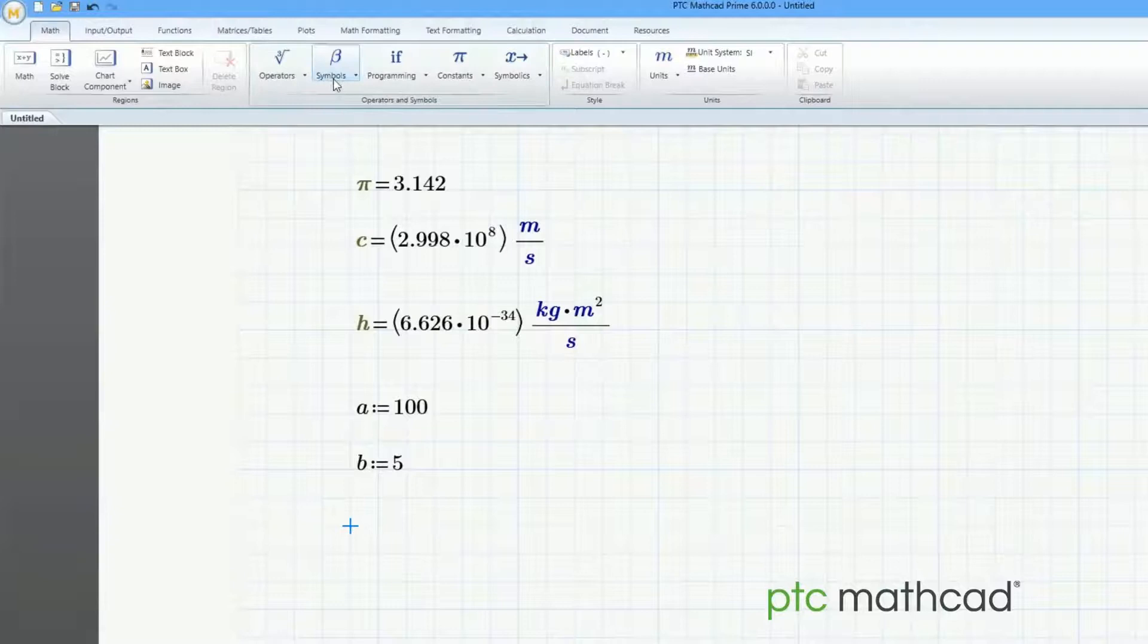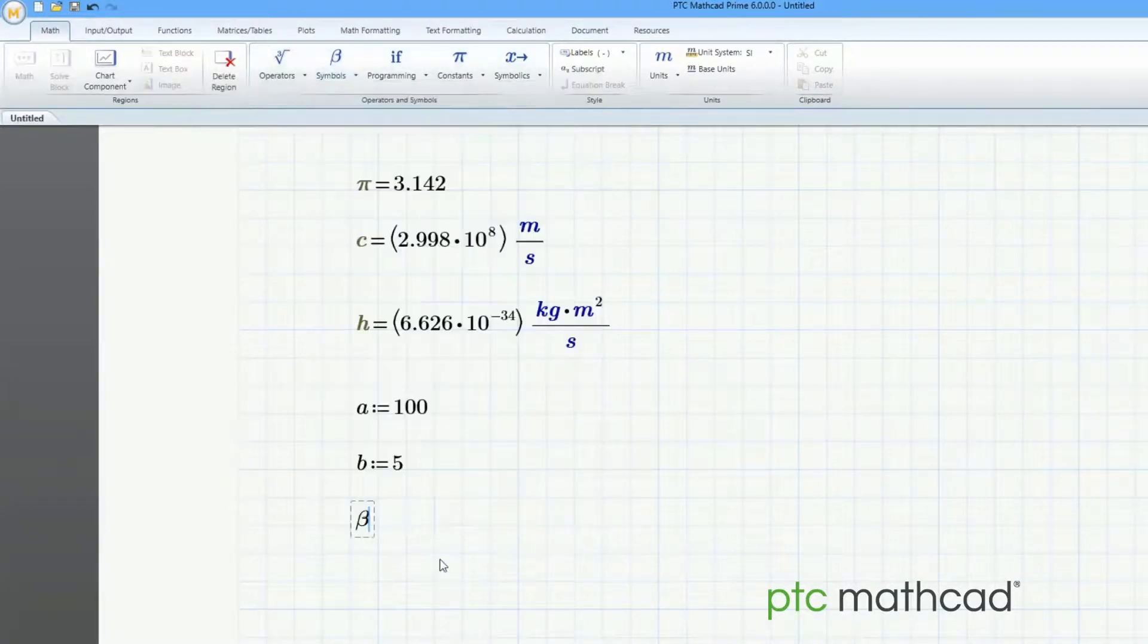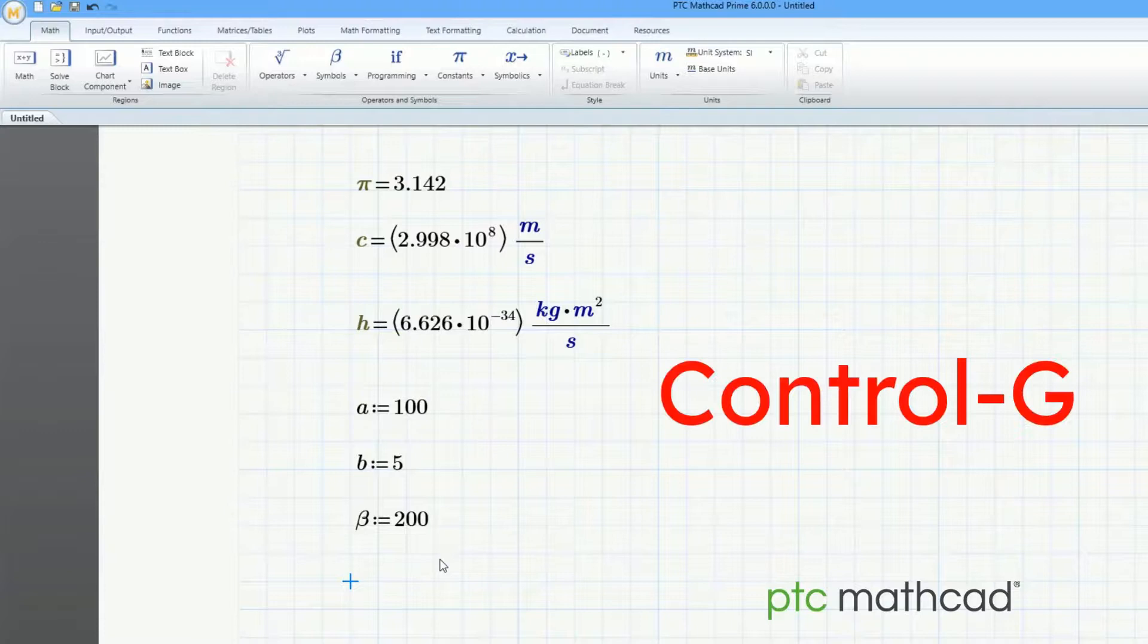Variable names can be Greek letters. They can be entered from the Symbols drop-down menu. The keyboard shortcut Ctrl-G converts Greek letters to their English equivalent.